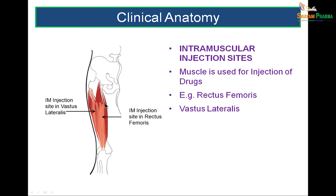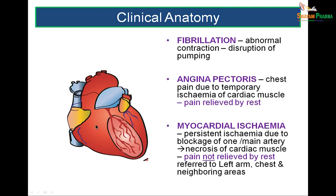Intramuscular injection sites: the rectus femoris and vastus lateralis are commonly used sites for intramuscular injections. In cardiac muscle, fibrillation is abnormal contraction or disruption of pumping of the heart muscle. Angina pectoris is pain due to ischemia of the cardiac muscle, relieved by rest. If more severe, it leads to a heart attack — myocardial ischemia, persistent ischemia due to blockage of a main artery where pain is not relieved by rest because there is necrosis of cardiac muscle fibers, leading to pain along the left arm, chest, and neighboring areas.